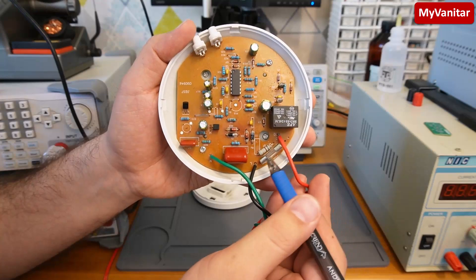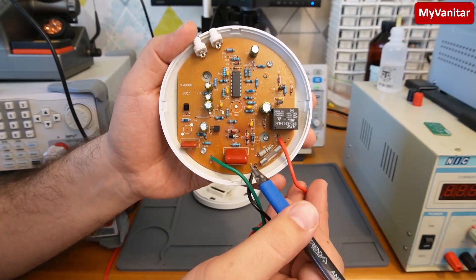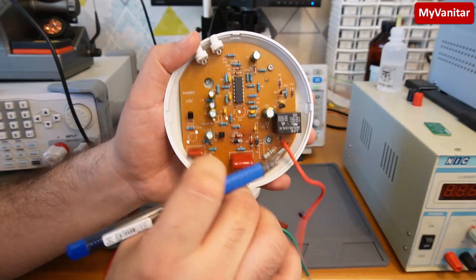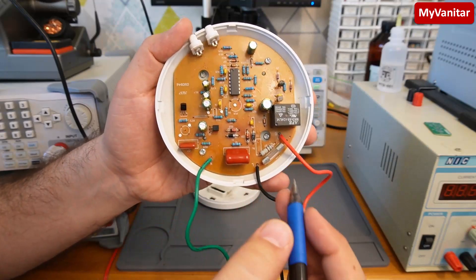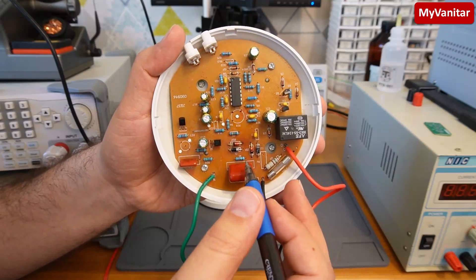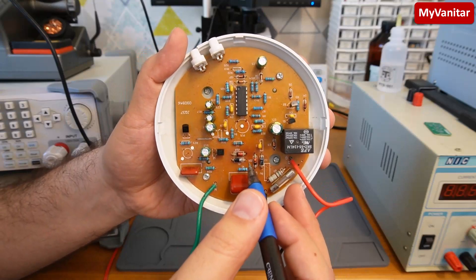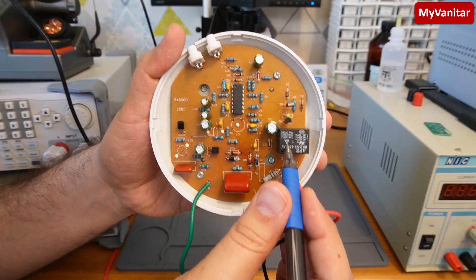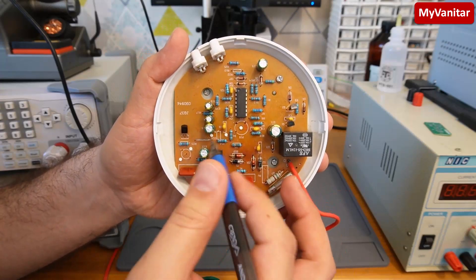Here is the AC input. A fuse for protection. Nice! Because many cheap products don't even have a fuse. Capacitor based supply. These two Zener diodes. This one probably to supply the relay individually. And this one to supply the rest.